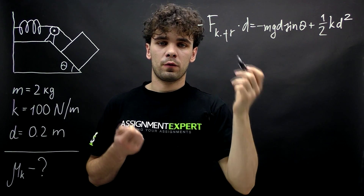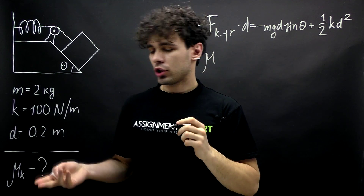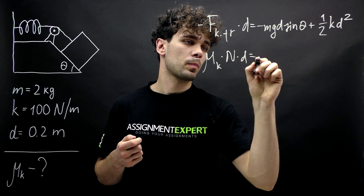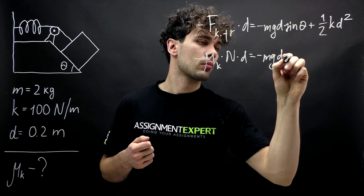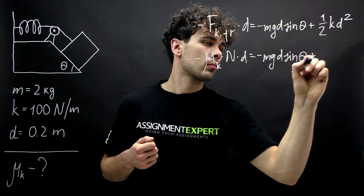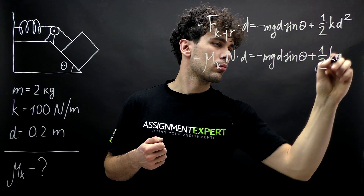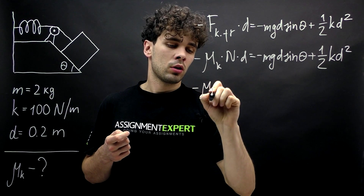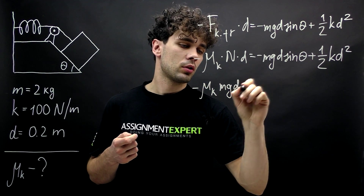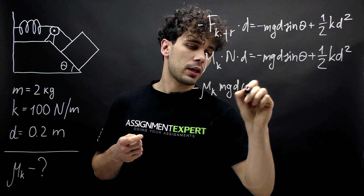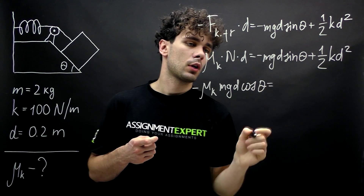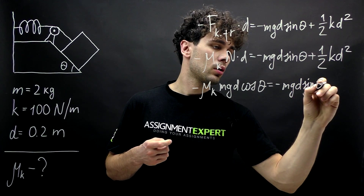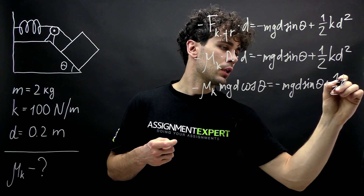Our friction force equals the coefficient of kinetic friction times the normal force, and everything else stays the same. The normal force in our case equals mg times d times cosine theta. And here we have negative mg·d·sine theta plus one half of k·d squared.